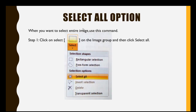Now if you want to select the entire image — the full image — then you will use the SELECT ALL option. For this, go to SELECT again in the image group, and when the drop-down menu appears, select the SELECT ALL option. All of the image will be selected by this.